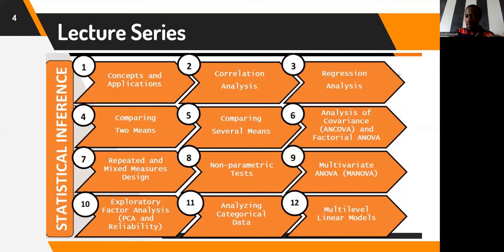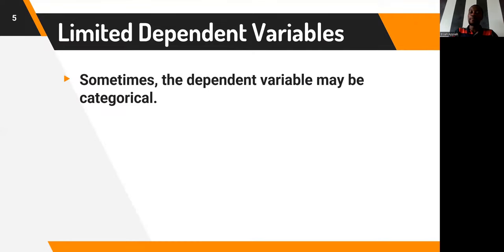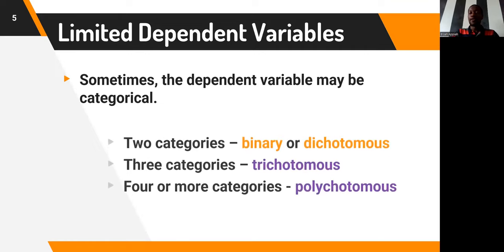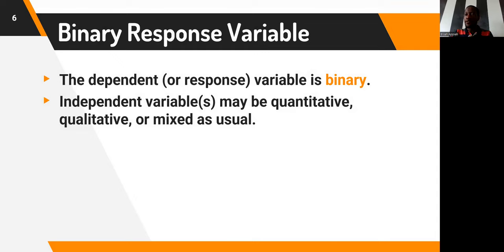This is part of the lecture series we're having, still on regression analysis. For limited dependent variables, sometimes the dependent variable may be categorical. If we have two categories, we normally call it binary or dichotomous. If there are three categories, we say trichotomous; four or more categories, we say polychotomous. For this particular lesson, we are going to focus on the dependent variable being binary — meaning it has only two categories.